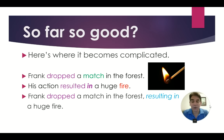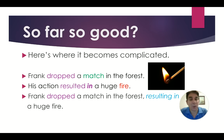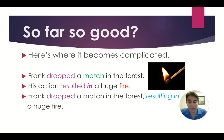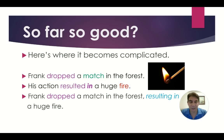Let's look at two sentences. Frank dropped a match in the forest. His action resulted in a huge fire. Each sentence has its own subject and its own verb: 'dropped' and 'resulted in.' What if we want to combine these two sentences into one? Frank dropped a match in the forest, resulting in a huge fire. Here, 'resulting in' is not the main verb — it's kind of like an afterthought, part of the sentence but not the main verb. That's why we use the -ing form.